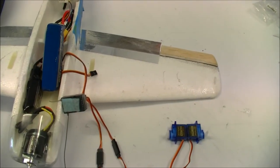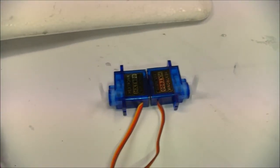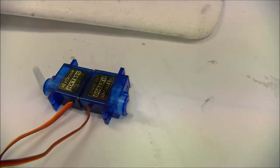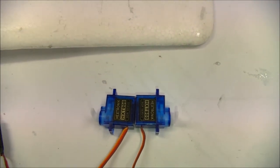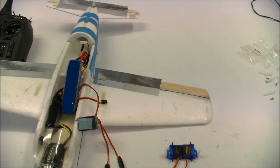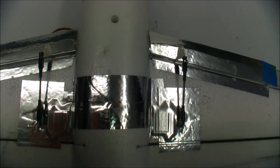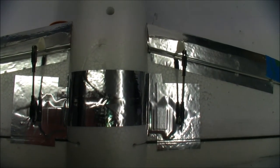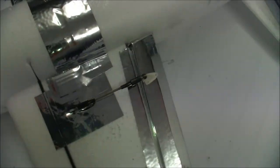I've just hooked up the aileron servos to find their neutral position and place the control arms on before we glue them in. And they're working fine. Aileron servos are glued in. As you can see I've used the silver foil tape to cover them up. Pushrods are attached. The next step is now to screw in the control horns.